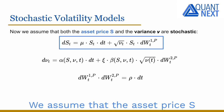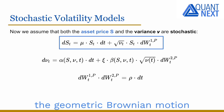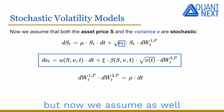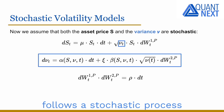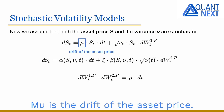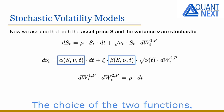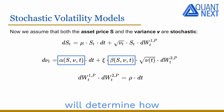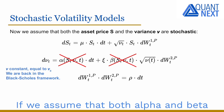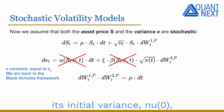We assume that the asset price S follows a process quite similar to the geometric Brownian motion in the Black-Scholes model, but now we assume as well that its variance nu follows a stochastic process which has the following general expression. Mu is the drift of the asset price. The choice of the two functions alpha and beta will determine how the volatility behaves. If we assume that both alpha and beta are equal to zero, then the variance is no longer stochastic — it is constant, equal to its initial variance nu zero. We are back in the Black-Scholes framework.